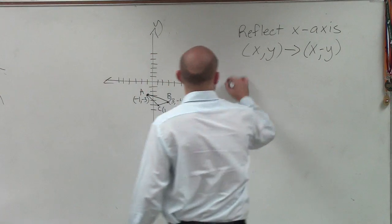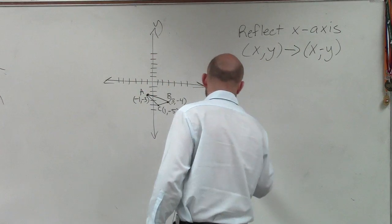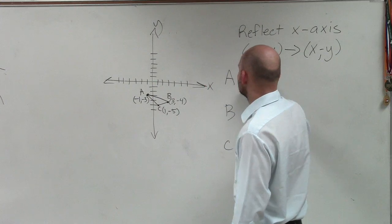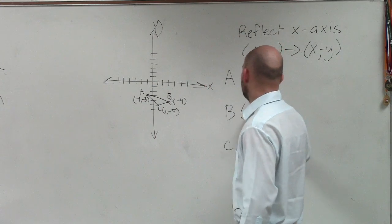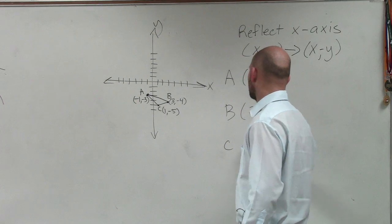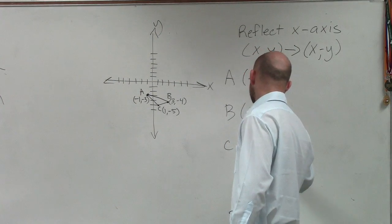And let's go and take a look at these points and see what I mean. So let's do A, B, and C. So A has the point (-1, -3). B has the point (3, -4). And C has the point (1, -5).